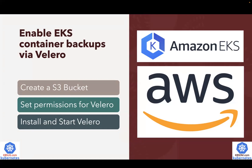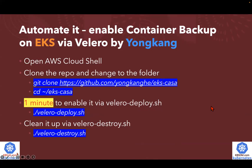Let's see how it works. If you're not using my automation to create the EKS cluster, you probably need to clone the repository because my Valero deploy code is also located in the automation GitHub repository. So once you clone the repository, change to that directory, and then just run valero-deploy.sh to enable the container backup. It only takes about one minute.